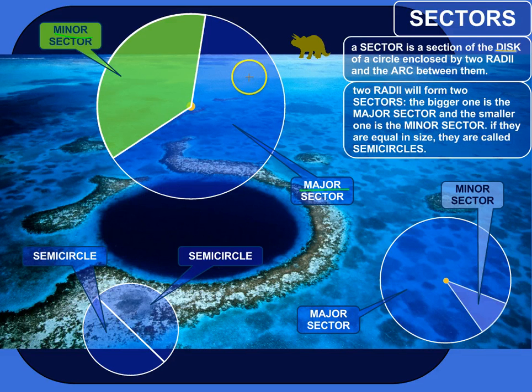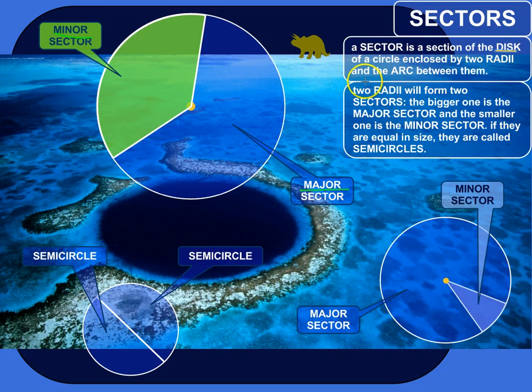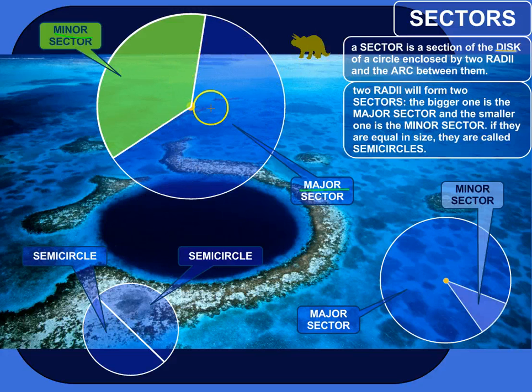You can think of it like a frisbee disc — everything but the edge of the frisbee disc. So a sector is a section of the disc, it's part of the disc of a circle.